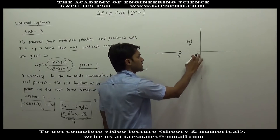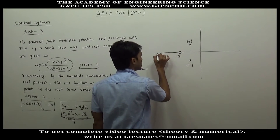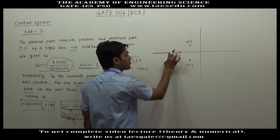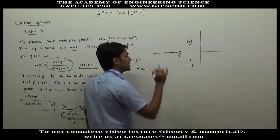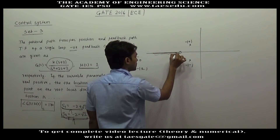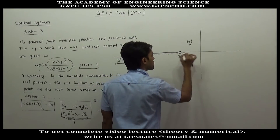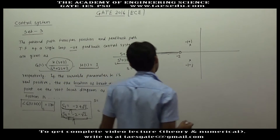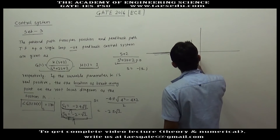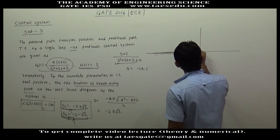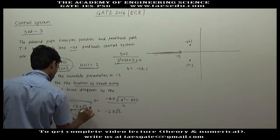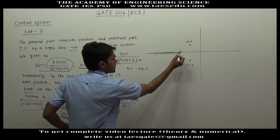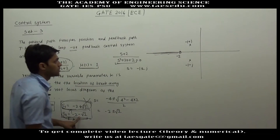On the real axis, to the right of s = -2 there are no poles or zeros, so that section is not on the root locus. To the left of s = -2 there is one zero, which is an odd number of poles and zeros to the right, so that section of the real axis is on the root locus. Now, s₂ = -2 plus √2 lies to the right of -2, so it is not on the root locus.